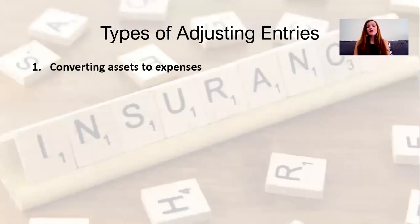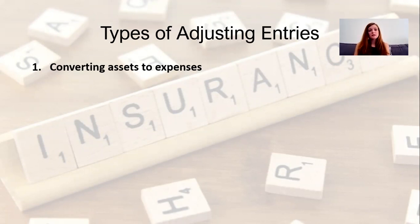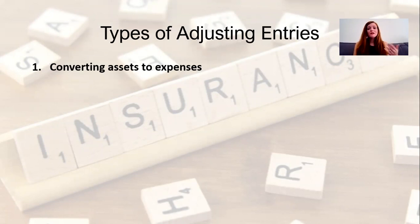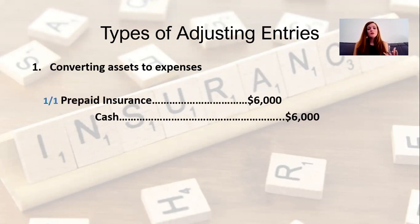We have four different types of adjusting entries. First, we have entries that convert assets to expenses. When we convert assets to expenses, we have an amount that we have already paid but have not yet incurred as an expense.